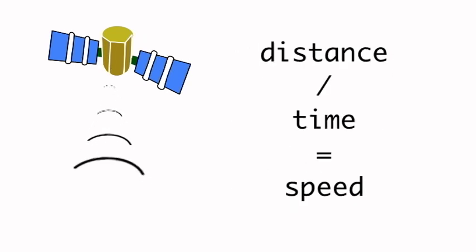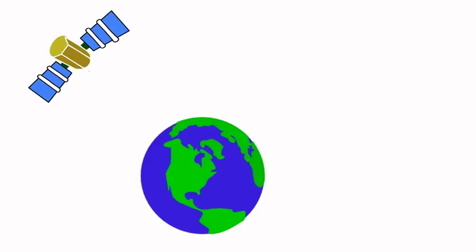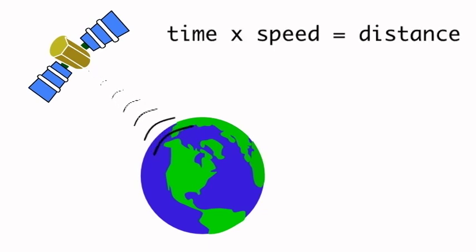So how exactly does this trilateration thing work? You remember that satellites are constantly streaming their location to Earth along with the time that they sent the location. And this enables your phone to calculate how far away it is from the satellite.